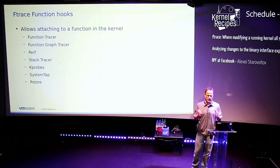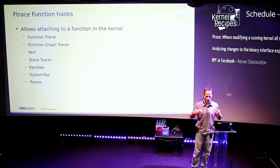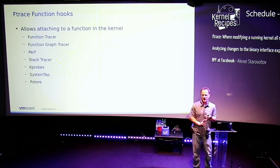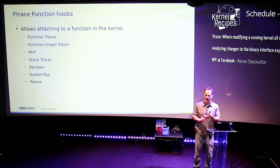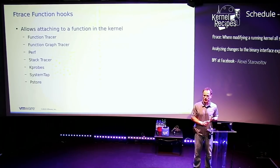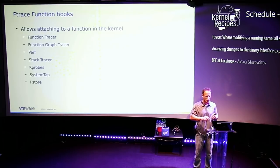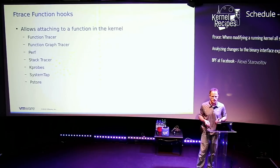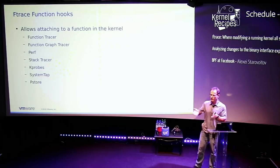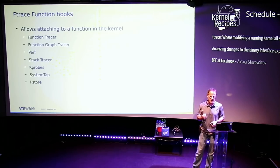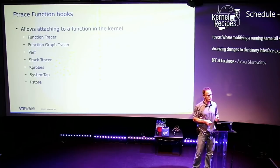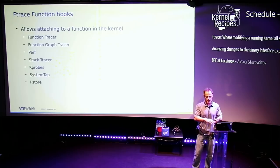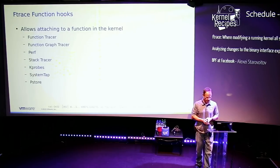When I say ftrace, a lot of people think it's the whole tracing utility — the ring buffer and all that. Really, ftrace doesn't mean that. ftrace is the function tracer, or more accurately, the function hook. It's what hooks into functions. Perf uses it. The function graph tracer uses it. Kprobes uses it. Systemtap uses it. BPF will soon hopefully be using it as well. When I say ftrace, it's actually the hook into the kernel functions — not the whole tracing system.